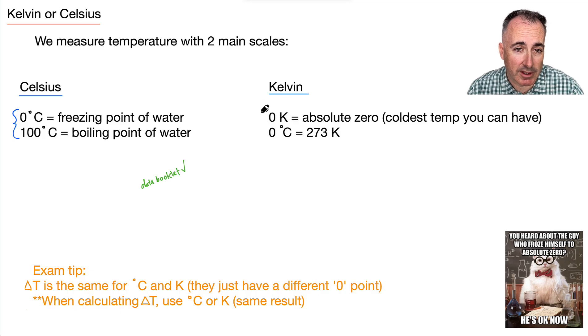Whereas Kelvin, Kelvin is interesting because it goes up by the same amount. It's just that it has a different starting point. 0 Kelvin is actually called absolute 0. That's going to be the coldest temperature you can theoretically have. And 0 degrees Celsius corresponds to 273 Kelvin. And luckily, you have an equation for this.